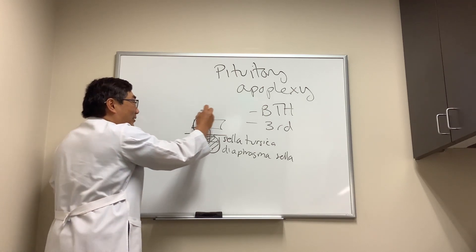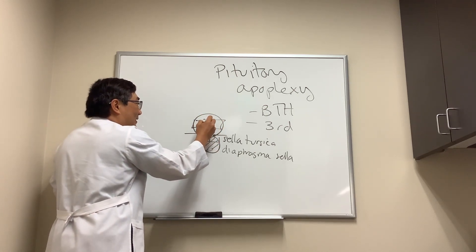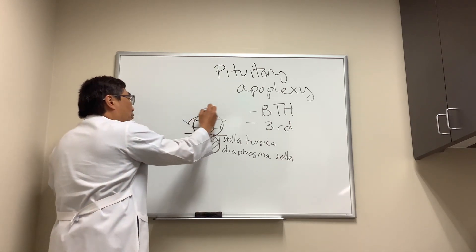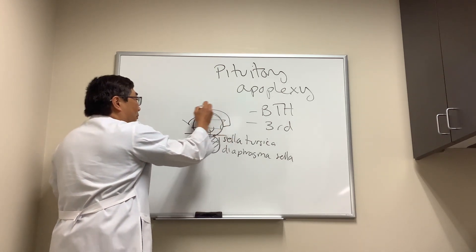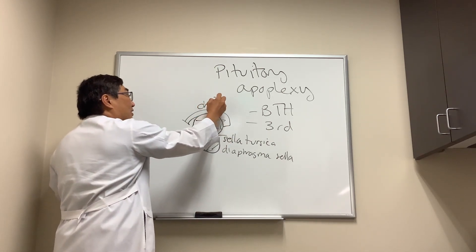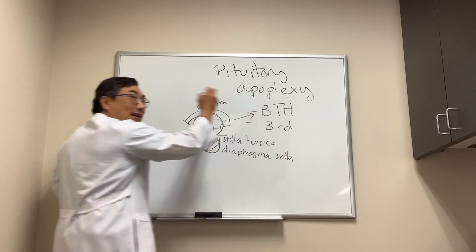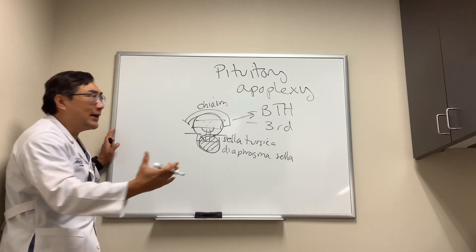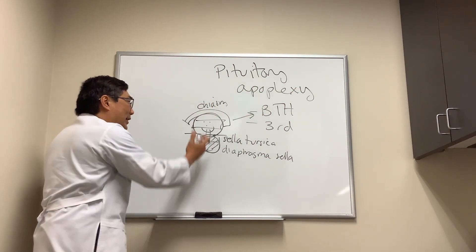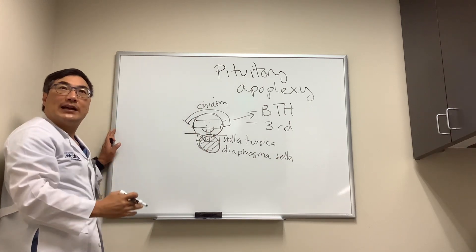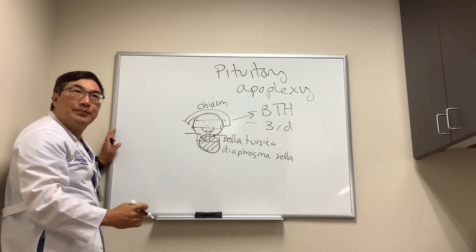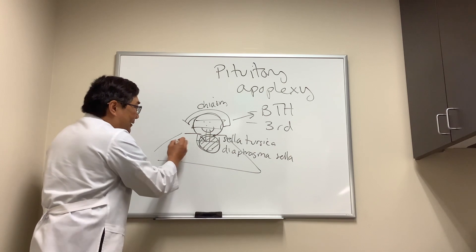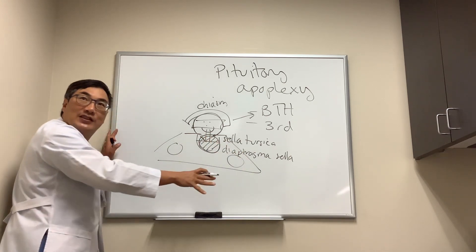When it goes through that hole it makes a snowman shape, and the poor chiasm will be worn as the hat of the snowman. That snowman configuration is what produces the acute bitemporal hemianopsia in pituitary apoplexy, going straight up through the diaphragma sellae. You also need to know that the cavernous sinus is on either side of the sella turcica.